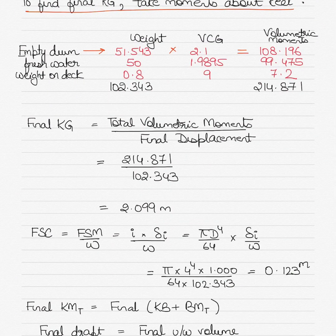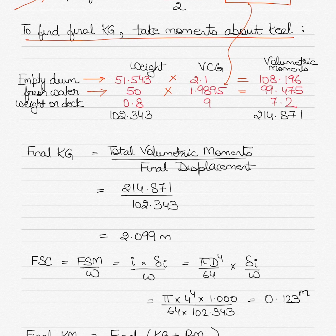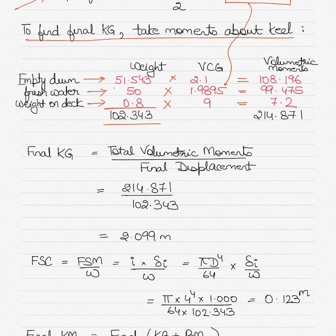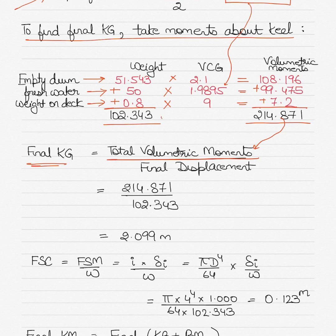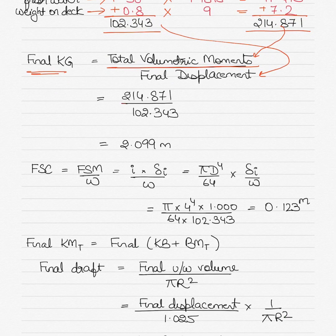Next, take the weight of fresh water (50 tons) multiplied by its KG of 1.9895 meters for the second moment. Then the deck weight of 0.8 tons multiplied by its KG of 9 meters gives the third moment. Add the three displacements (51.543 + 50 + 0.8) and the three moments together. Final KG = total volumetric moment ÷ final displacement = 214.871 ÷ 102.343.